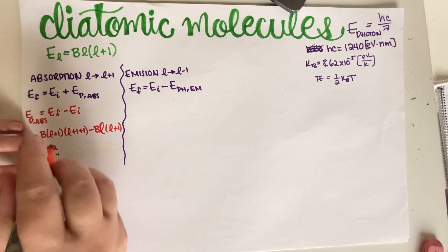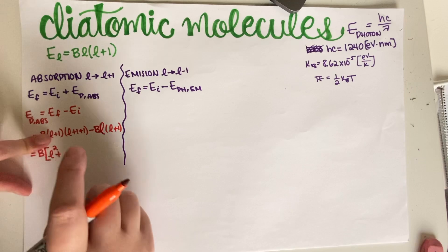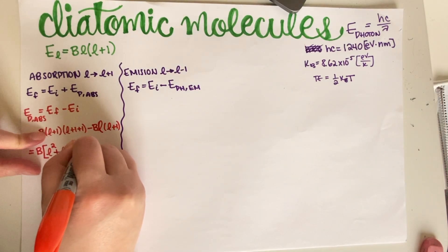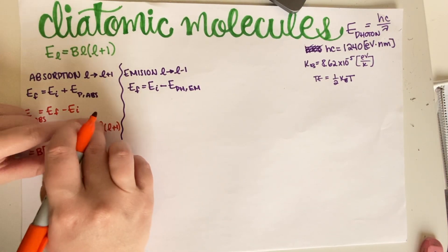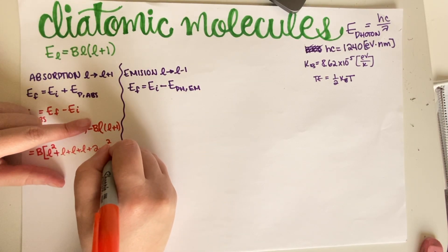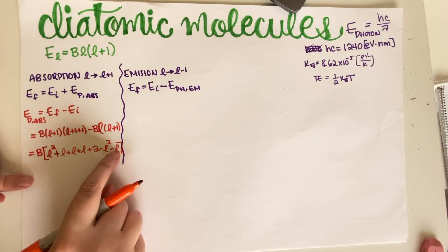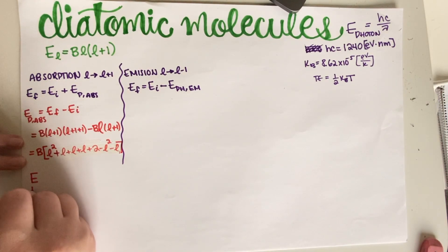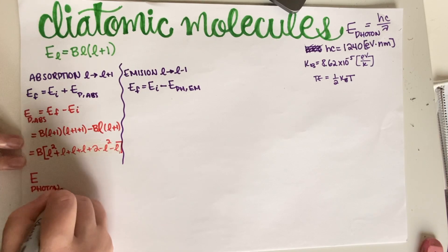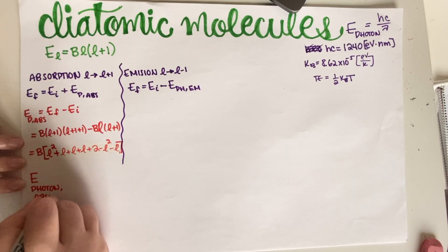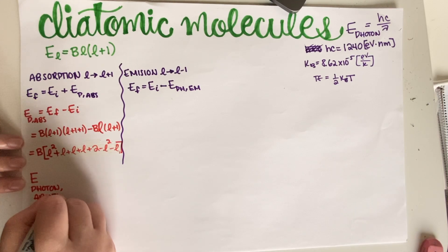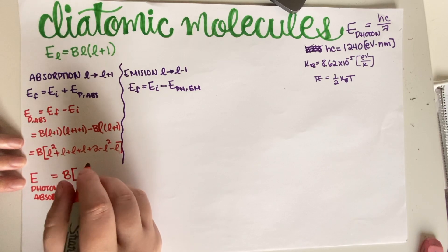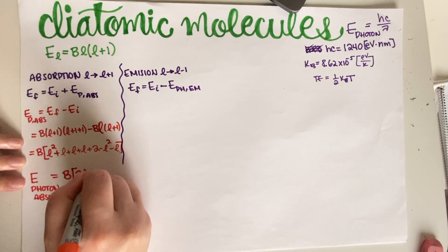There was a small algebra mistake. Re-expanding (L+1)(L+2) gives L² + L + L + L + 2 = L² + 3L + 2, minus L² + L. The L² terms cancel, 3L − L = 2L, plus 2. So the energy of the photon absorbed is E_abs = B(2L + 2).